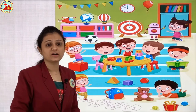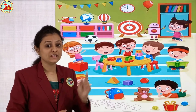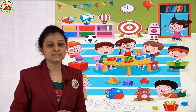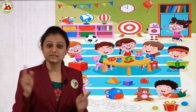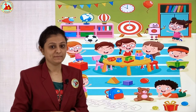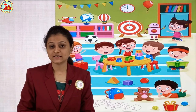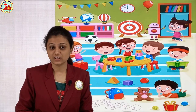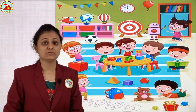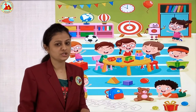Everything you see has got a shape around you. Look up — you can see the ceiling fan. The middle part is circle in shape, whereas the fan wings are rectangle in shape. The table on which you are studying is rectangle or square in shape. There are different types of shapes you can see around you, and we are going to learn a few of them.